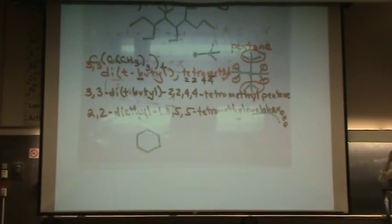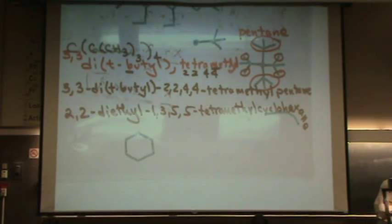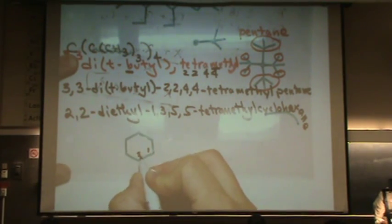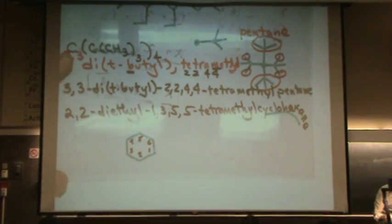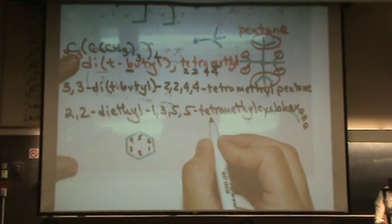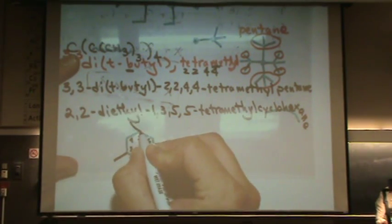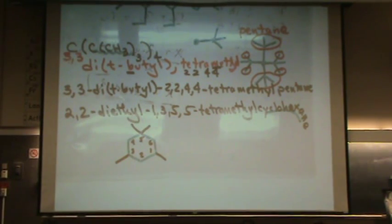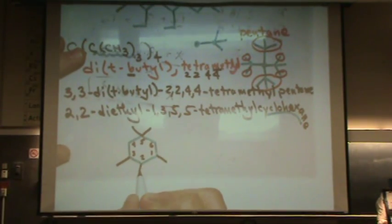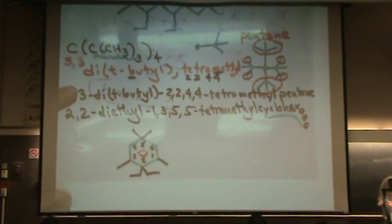And then you just have to figure out some position for the one. So when you're doing it this way, you can randomly assign the number. It doesn't matter, because you're going to put the numbers according to what the name says. So there's 1,3,5,5-tetramethyl. So one, two, three, and five, five tetramethyl. And then 2,2-diethyl. There we go. And we got it. Put a little smile on the face in the middle. And you are done.